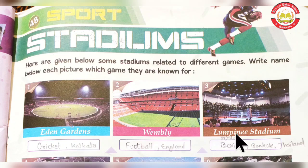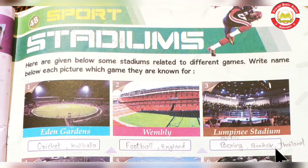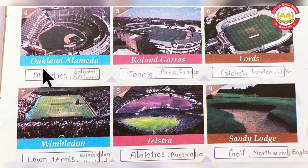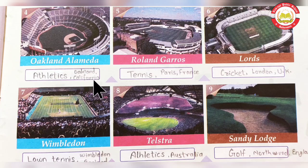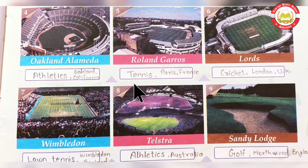Next one is Lumpini Stadium, which basically belongs to Boxing and is located in Bangkok, Thailand. Number four is Oakland Alameda, which is an Athletics stadium located in Oakland, California. Number five is Roland Garros — its ground belongs to Tennis and is located in Paris, France.